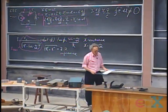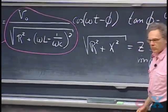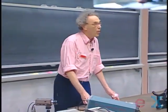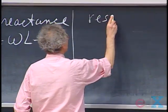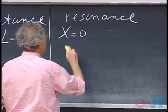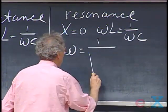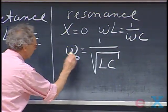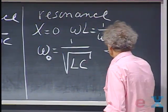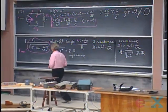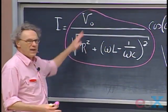There is one particular value of Z, and therefore one particular value of ω, for which I_max reaches a maximum — and that's what we call resonance. It is at resonance when X equals zero, so when ωL = 1/ωC, which means ω = 1/√(LC). We call that the resonance frequency ω₀. At that point Z equals just R, because when X is zero the ωL and 1/ωC terms cancel each other and the system behaves as if there were only a resistor.